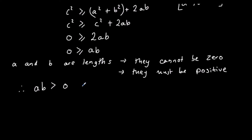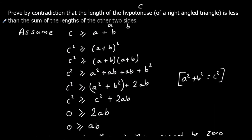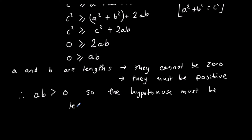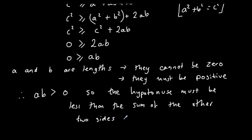This assumption cannot be true. So the hypotenuse must be less than the sum of the other two sides. We assumed the opposite, then found the contradiction, which means we've proved that the hypotenuse is less than the sum of the other two sides.